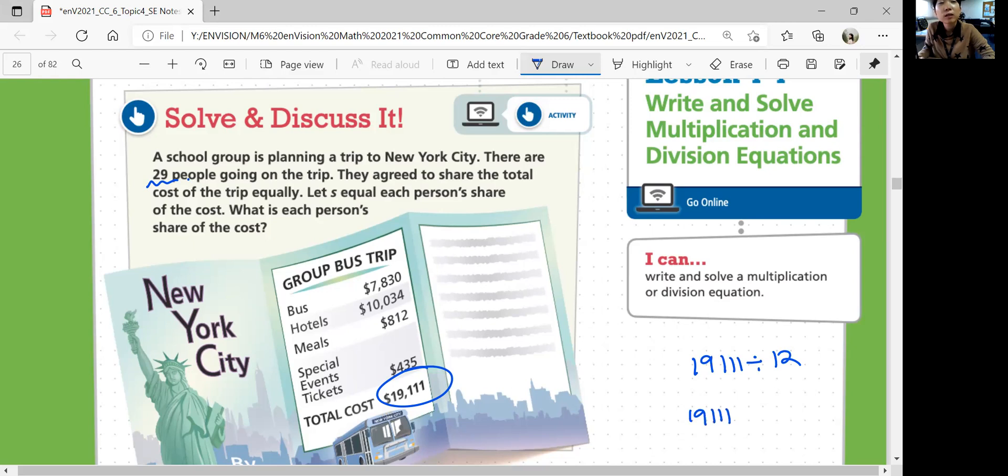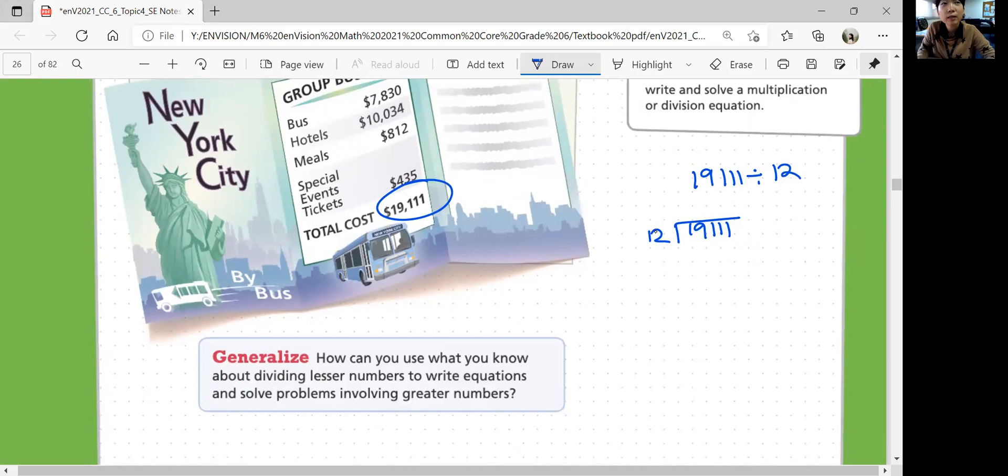So $19,111 divided by 29, you can use long division to answer this question. Let's divide $19,111 by 29. Wait, I'm sorry, not 12. We're doing 29, right? So 29, 29 people. I don't know where I got 12 from.